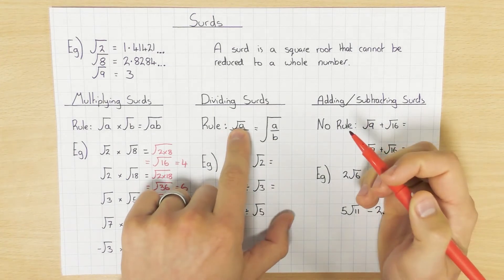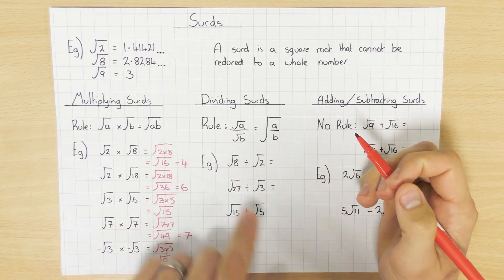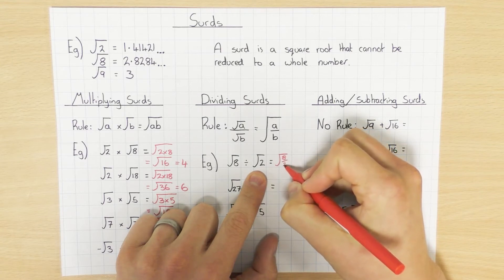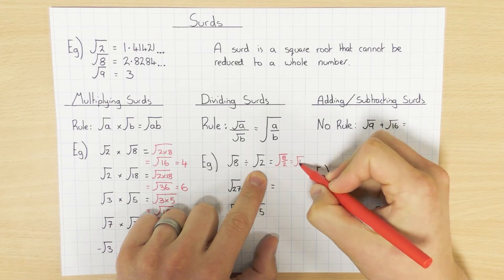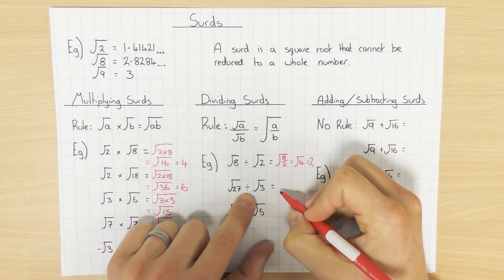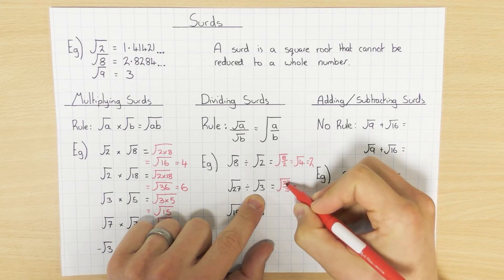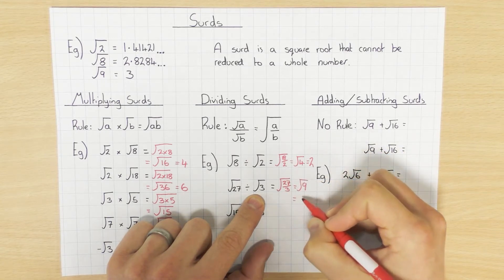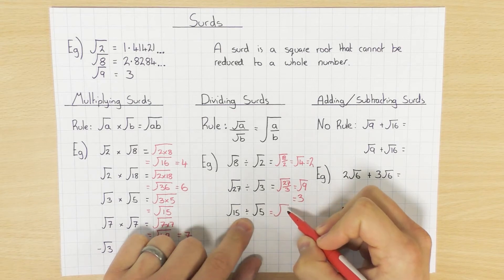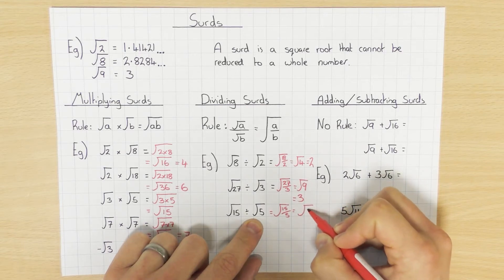Exactly the same idea when it comes to dividing. If you have the square root of a number divided by the square root of a number, that is the same as saying the square root of the top number divided by the other number. So root 8 divided by root 2 is just the square root of 8 divided by 2, which is the square root of 4, simplifying to 2. Square root of 27 divided by root 3 is root 9, which is 3. And root 15 divided by root 5 is just the square root of 3.